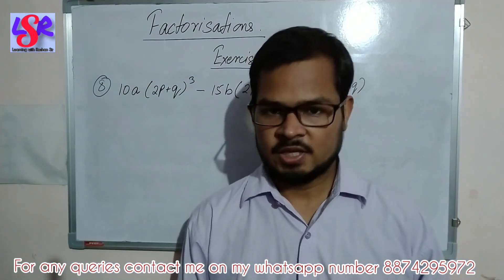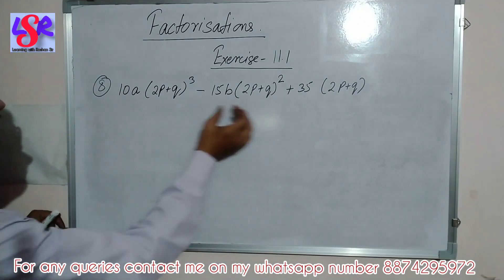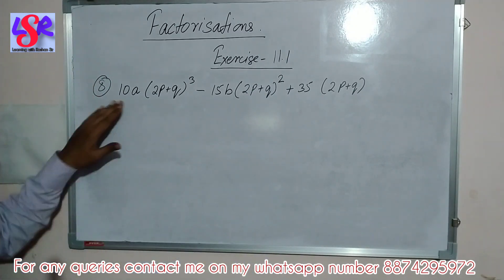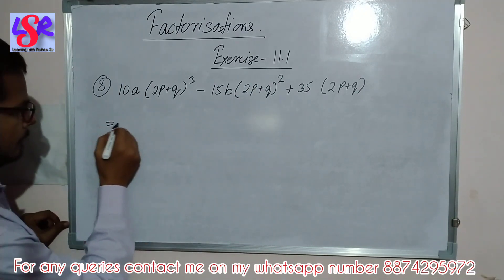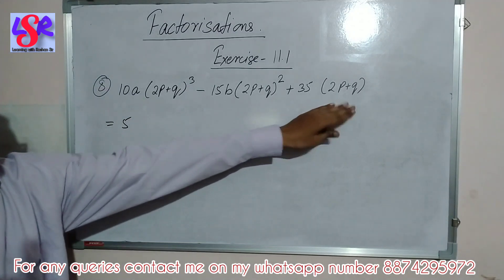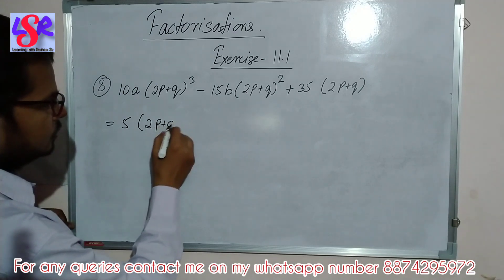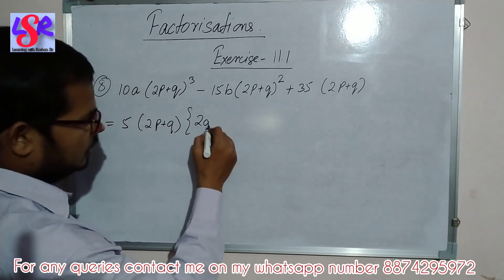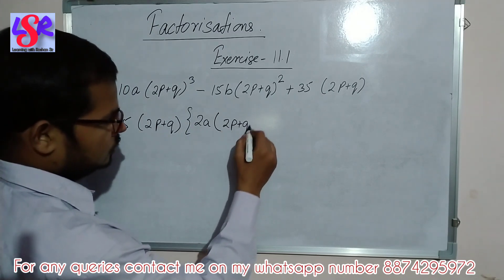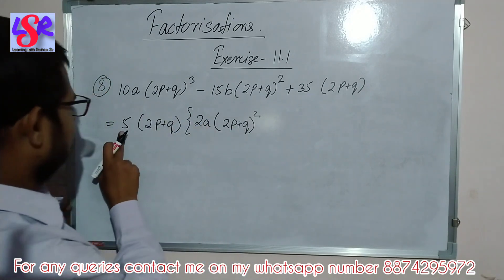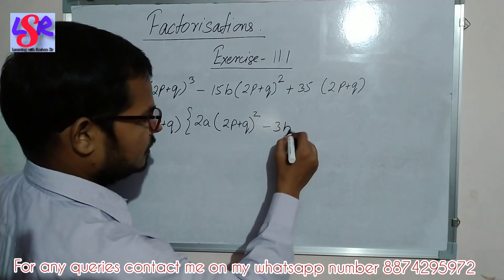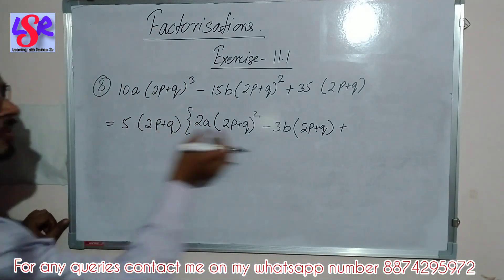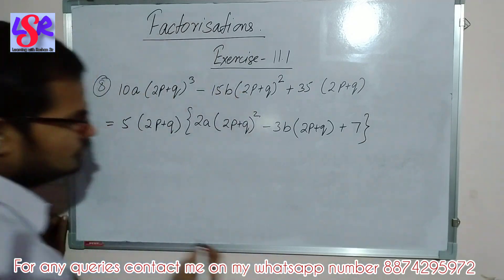Now question number 8. In this question we are having 10a, 15b, and 35 with brackets to the power 3, 2, and 1 respectively. From 10a, 15b, and 35 we can take 5 as common, and from the brackets we can take (2p + q) to the power 1 as common. Then from the remaining: in the table of 5 we get 10 two times, so 2a, and the bracket (2p + q)² is left. Then minus: in the table of 5 we get 15 three times, so 3b, and (2p + q) is left. Then plus: in the table of 5 we get 35 seven times, so 7. So this is your answer.